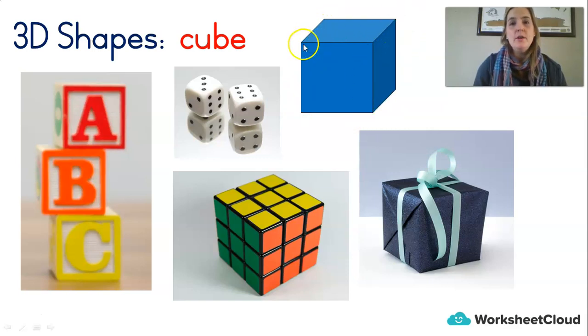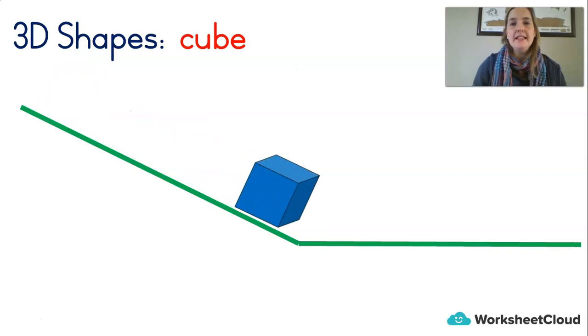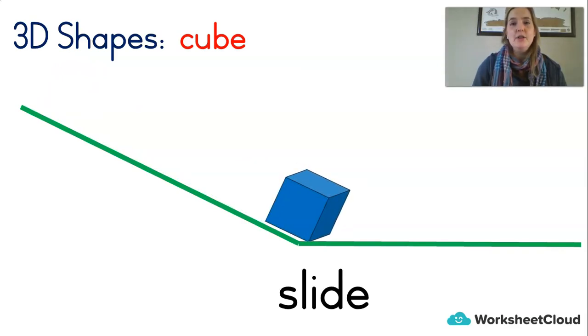It's okay if you still call it a box shape. It is a box shape. But if you can remember the fancy word, that's even better. Now if we put a cube on a hill, what will happen? It will slide. Right, if a shape has a flat side, it will slide. So a sphere rolled, a cube slides.